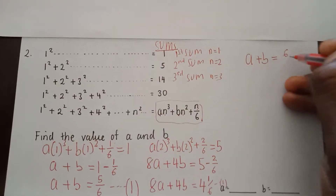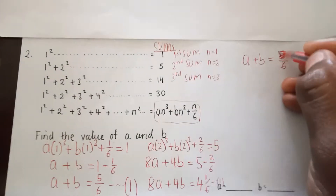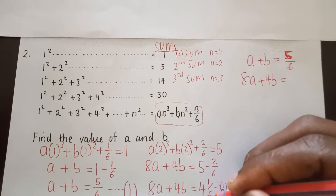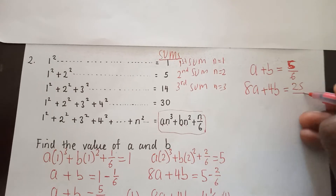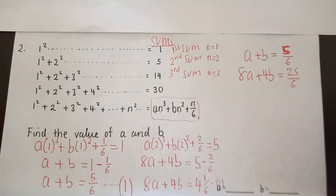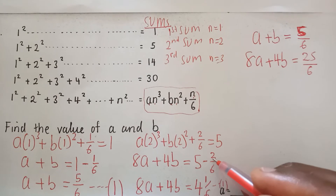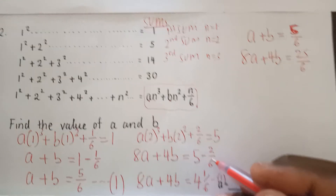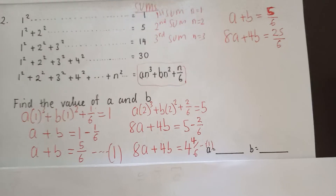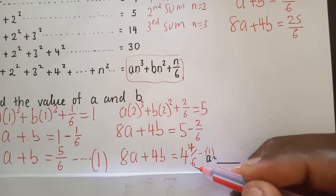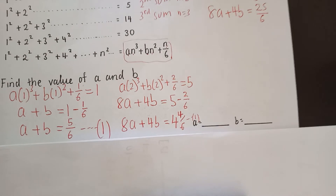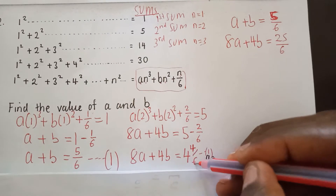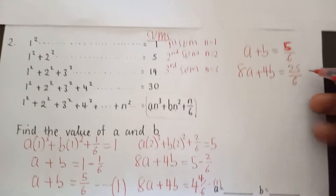After getting the two equations, I write them down properly. The first equation is a plus b equals five over six, and the second equation is 8a plus 4b equals 28 over six.